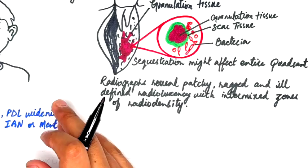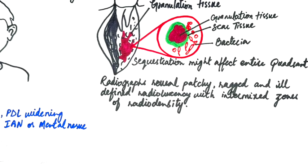These zones may be intermixed with zones of radio-opacity. Less frequently, the infection may be predominantly osteosclerotic or occasionally almost osteolytic. The osseous change is continuous and may exhibit spread to the periosteum by direct extension. This is different from primary chronic osteomyelitis, where there are multiple separate radiolucent areas of bone loss within zones of radio-opacity.